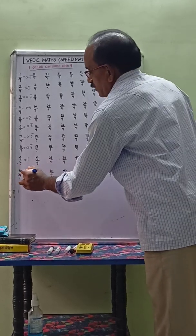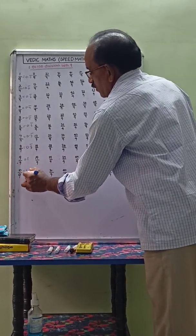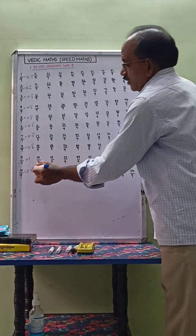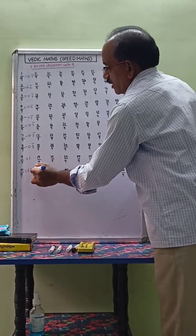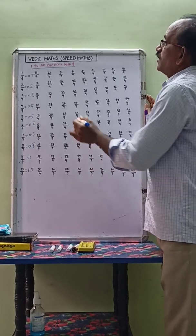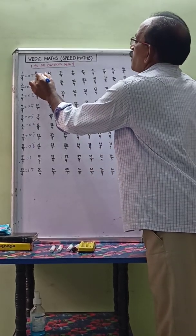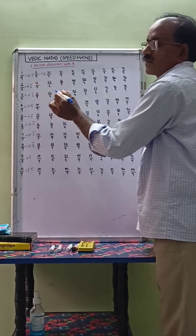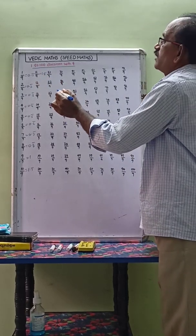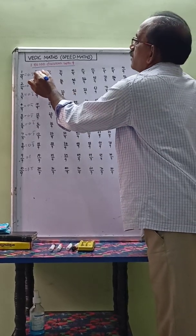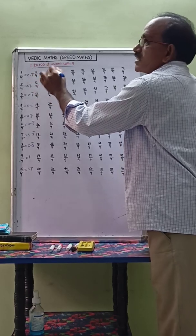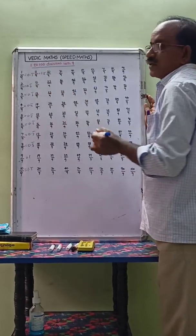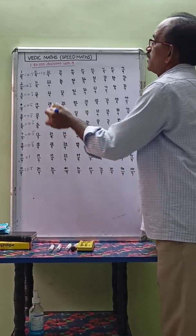10 by 9 equals 1.1 bar. Here, the remainder — sum of the digits, digital sum: 1 plus 1 equals 2. So 10 by 9 is 1.1 bar. Just easily solve.